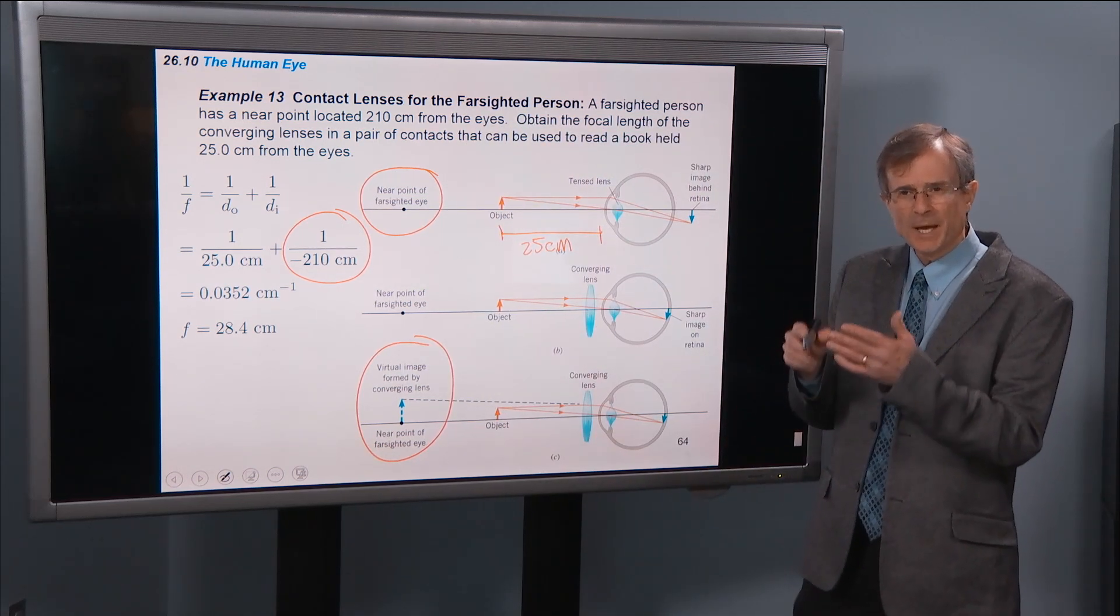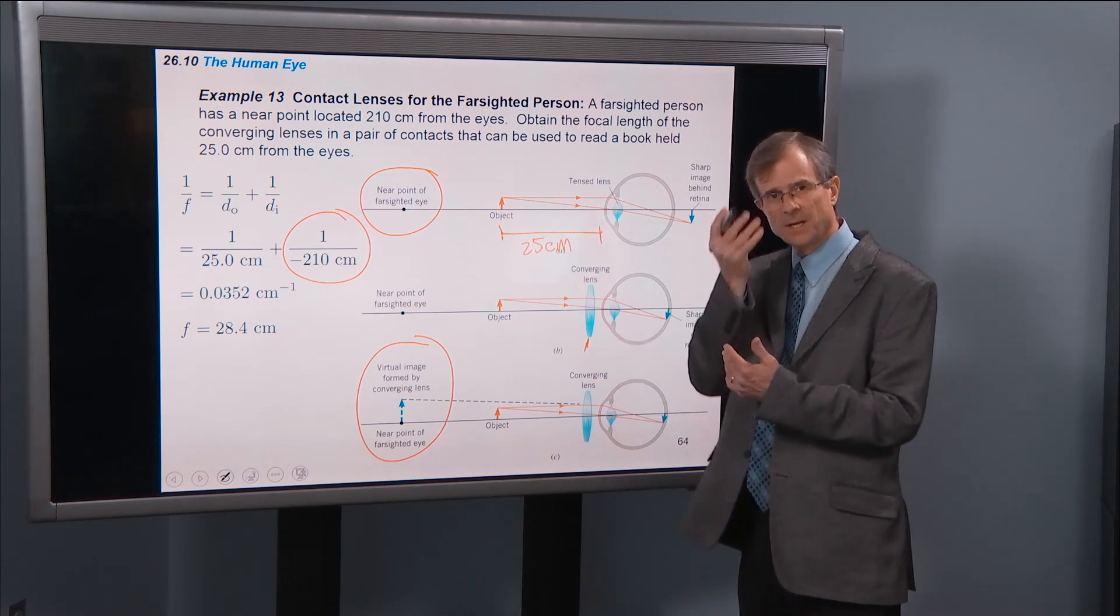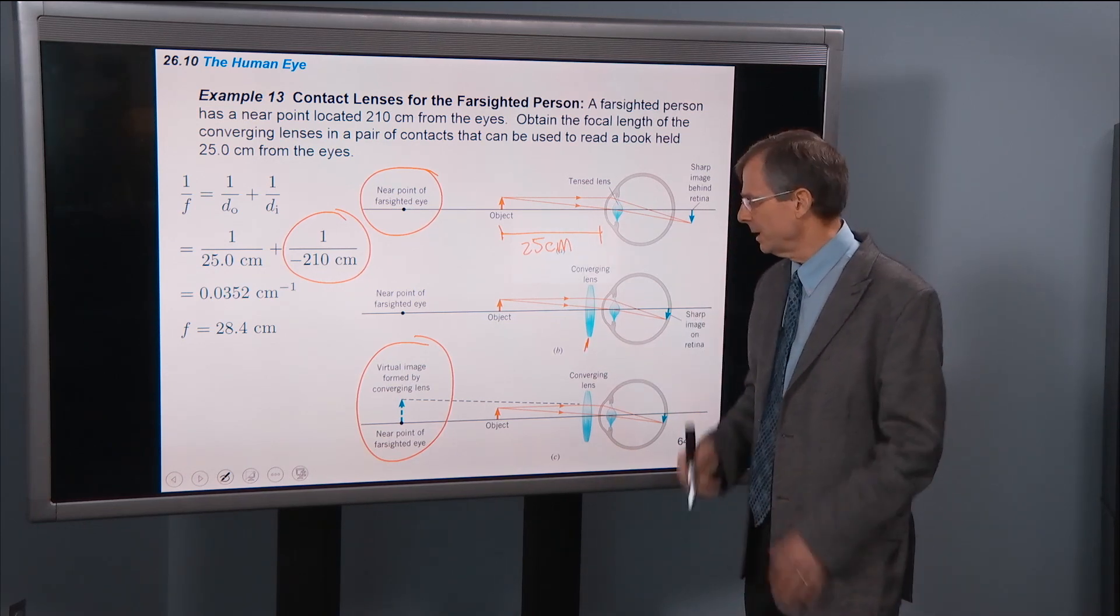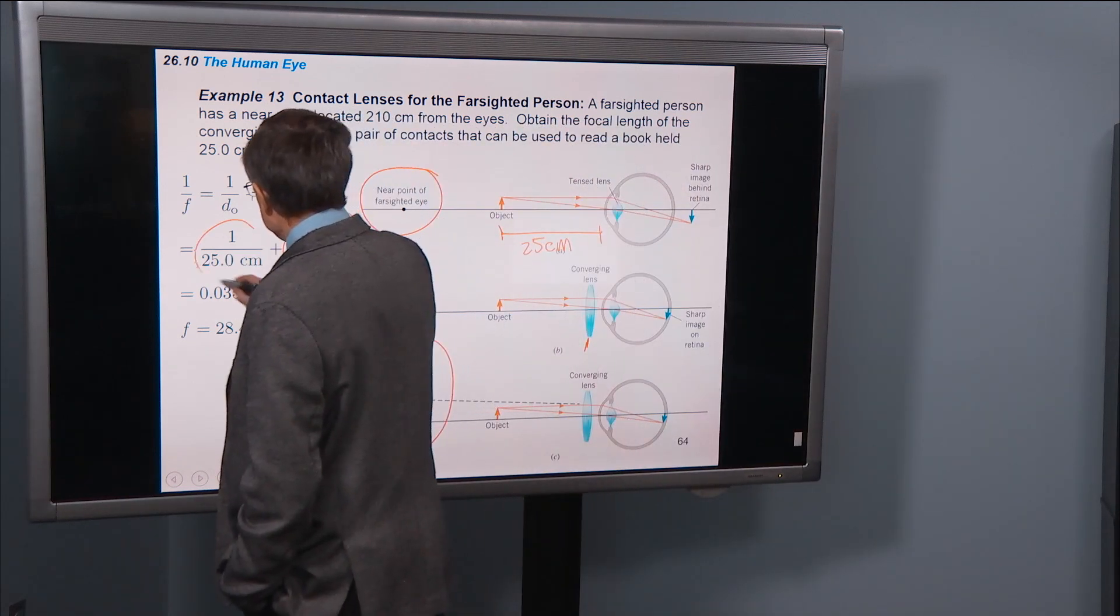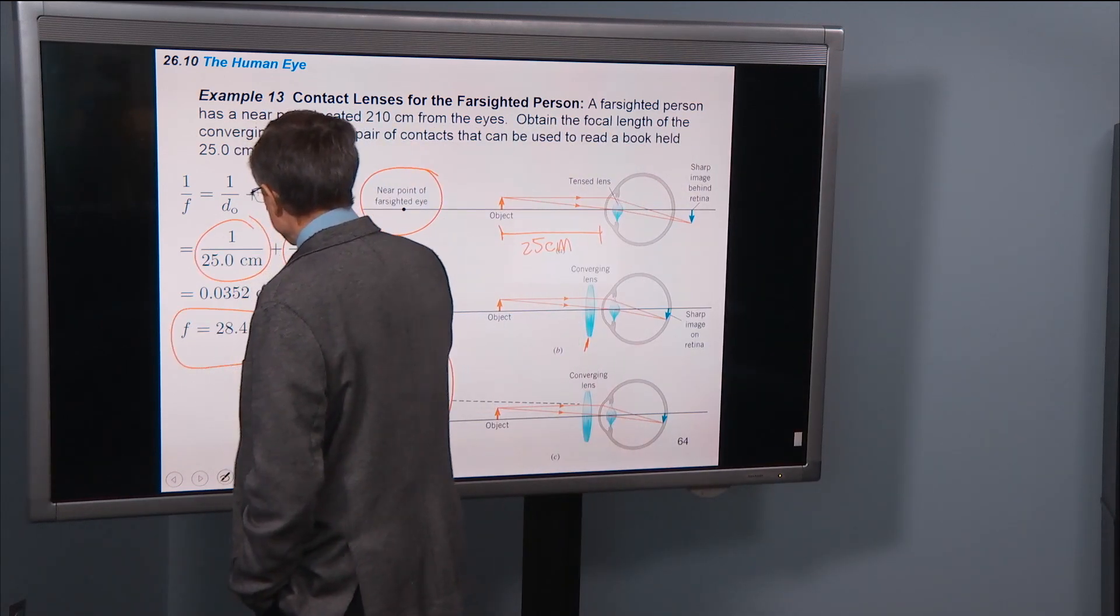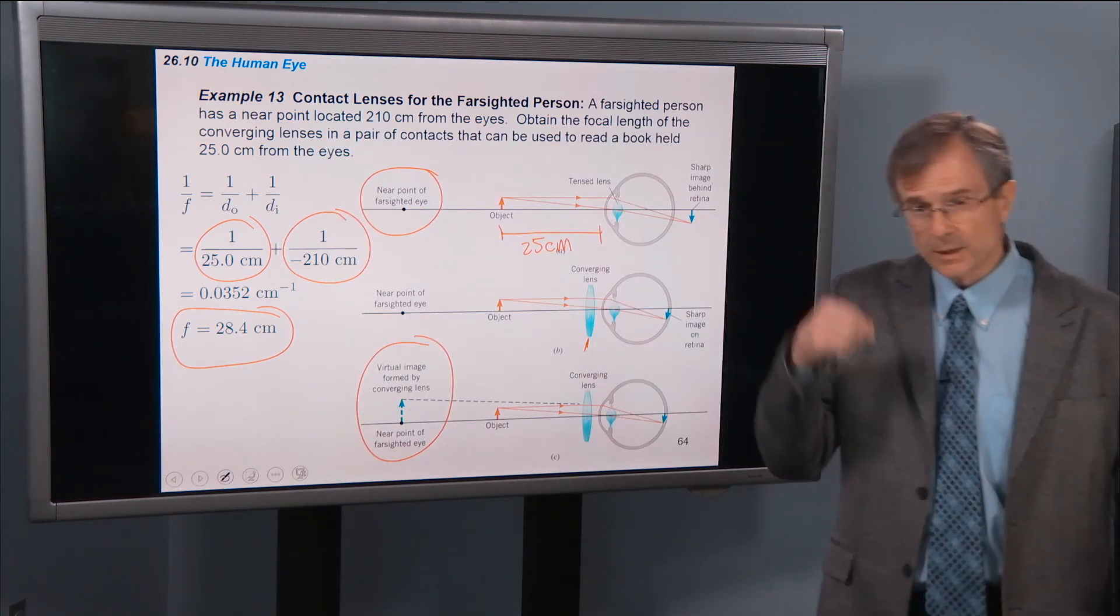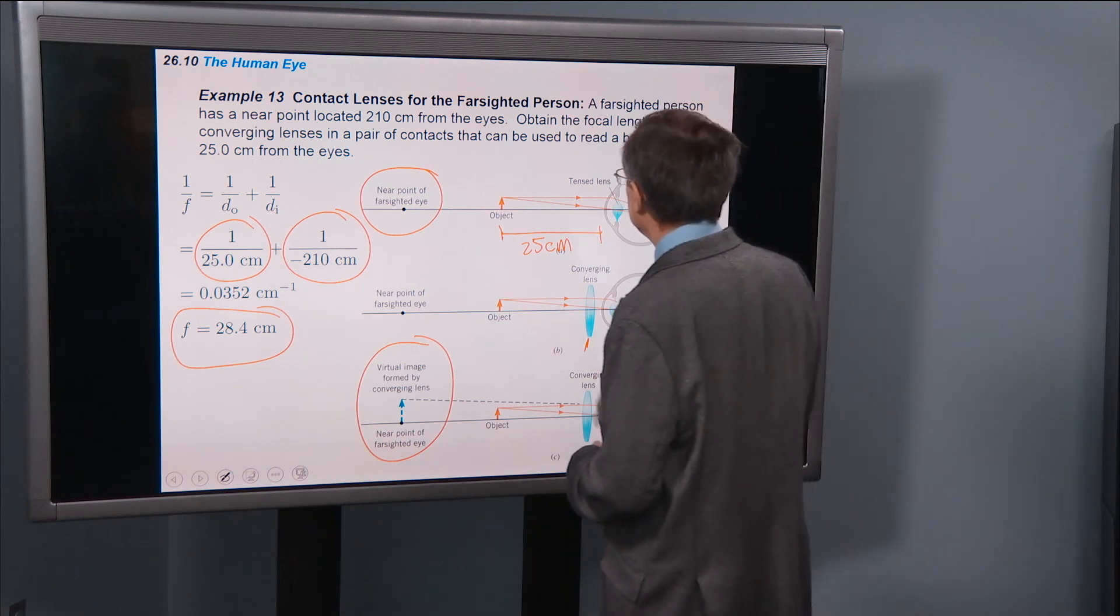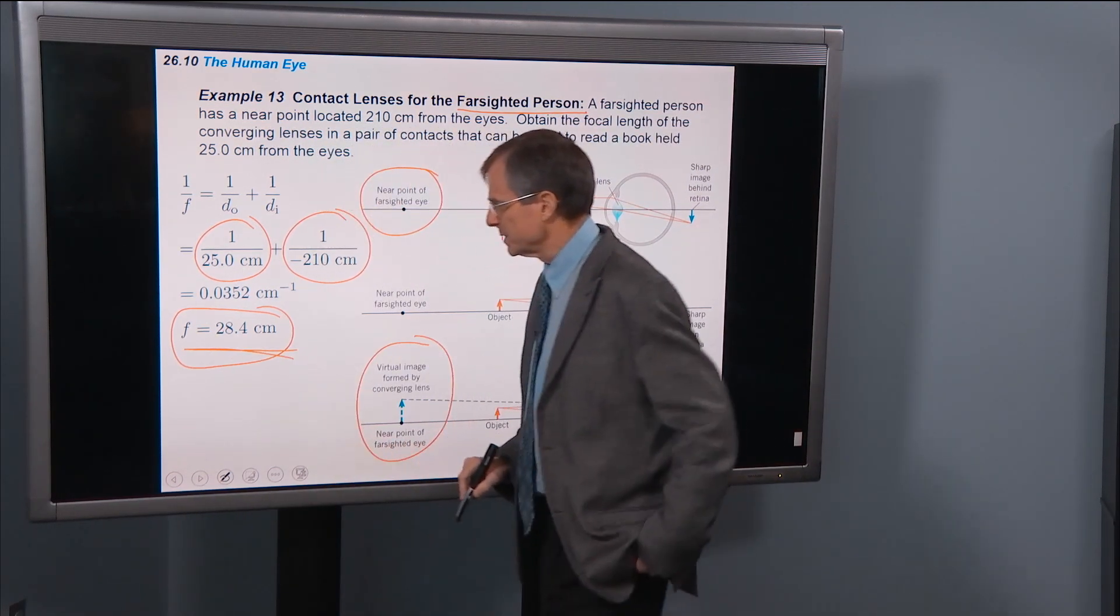In this case we don't have to worry about the distance between the lens and the eye because it's a contact lens. It's right up against the cornea. So 1 over 25 for the object distance, and this tells you that the focal length of that converging lens needed for that farsighted person must be 28.4 centimeters.